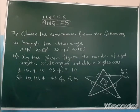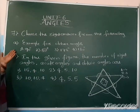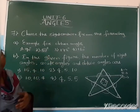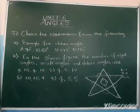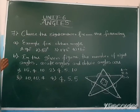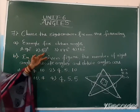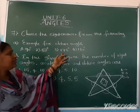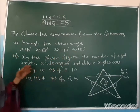Now, question seven: choose the right answer from the following. They have given examples. First one: example for an obtuse angle. An obtuse angle means above 90 degrees and below 180 degrees. The four options given are: 90 degrees, 53 degrees, 178 degrees, and 180 degrees.